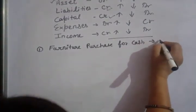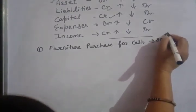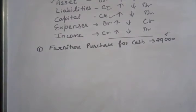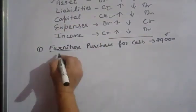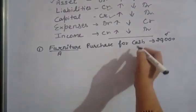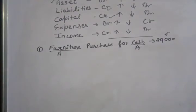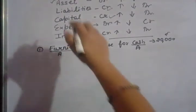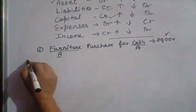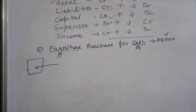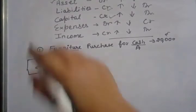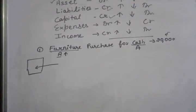Furniture purchased for cash for Rs. 20,000. First, identify the transactions and identify which accounts are created. Furniture is a fixed asset. You are buying a fixed asset. Cash is also an asset — a current asset. No problem. So when you buy furniture, you didn't have furniture before, and now you bring furniture into your business. So what do you do with furniture? Debit. Furniture goes on the debit side.